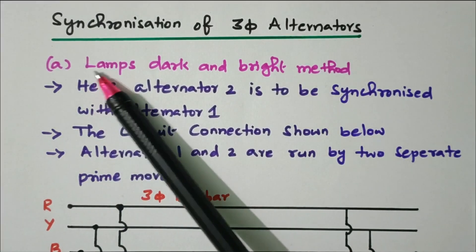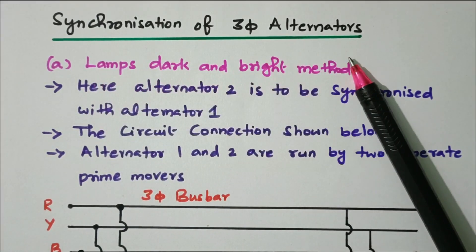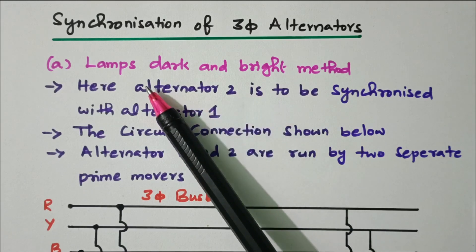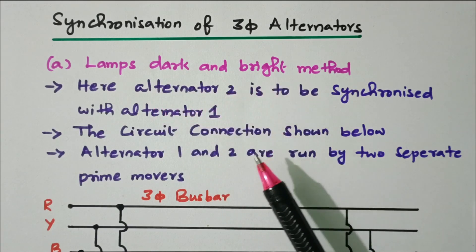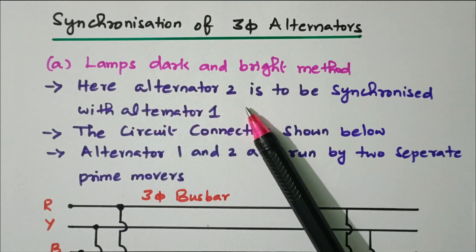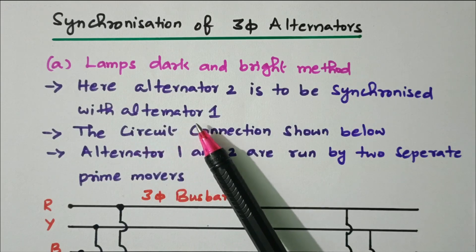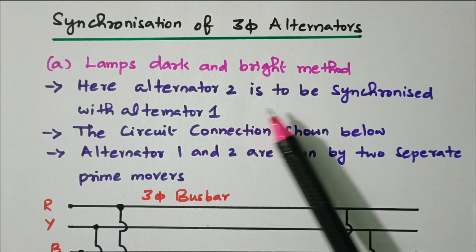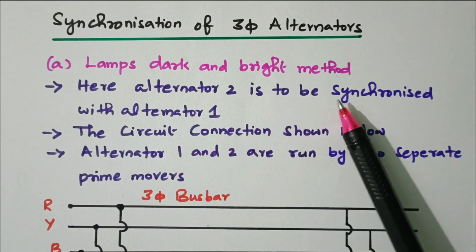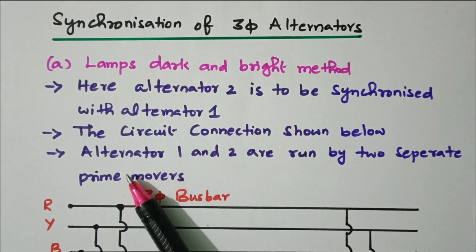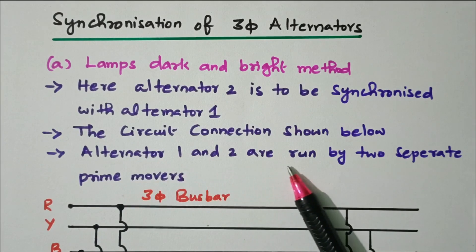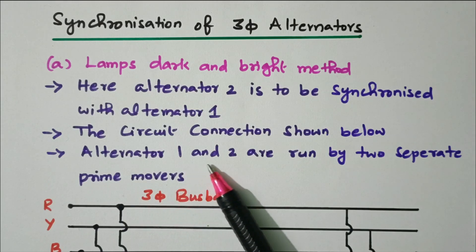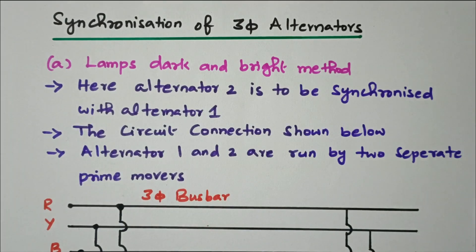For synchronization of a three-phase alternator, there are two methods available: the lamp dark and bright method, and the synchroscope method. In the lamp dark and bright method, alternator 2 is to be synchronized with alternator 1, which is already connected to the bus bar. Alternator 1 and 2 are each run by separate prime movers.